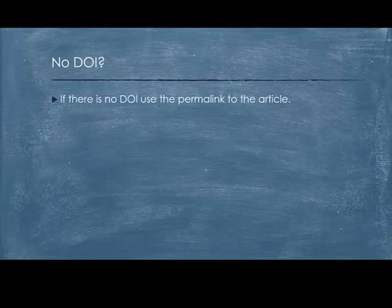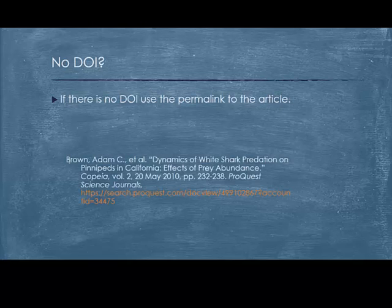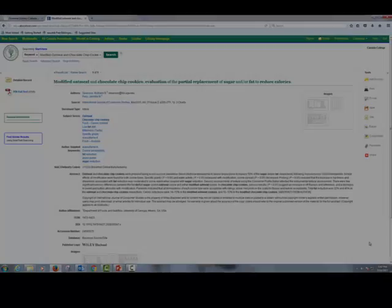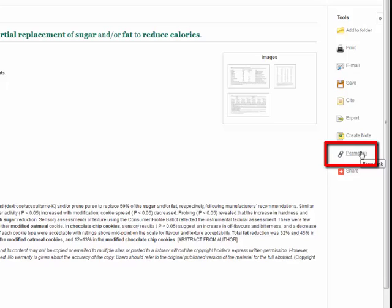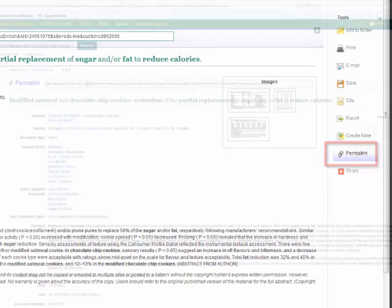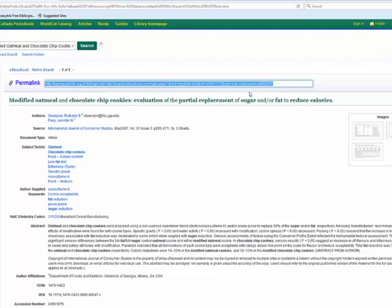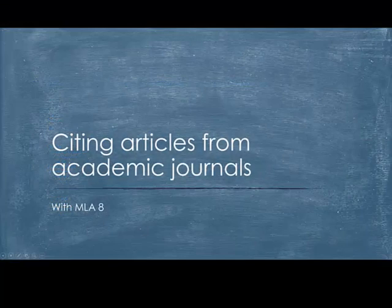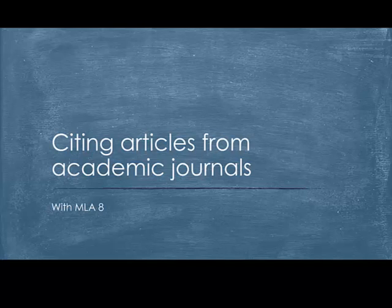What do you do if you don't have a DOI? If there is no DOI, use the permalink to the article. So instead of a DOI, you just put a link at the end of the citation. To find a permalink, click on the side of the screen for the link that says Permalink under Tools. And here is the permalink to this article. And that is how you cite an article from an academic journal using MLA-8.